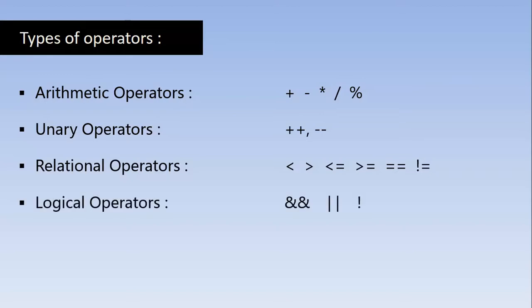Logical operators — there are logical conditions to check. We use a double ampersand for logical AND operation, double pipe for logical OR operation, and for logical NOT there is an exclamation symbol.